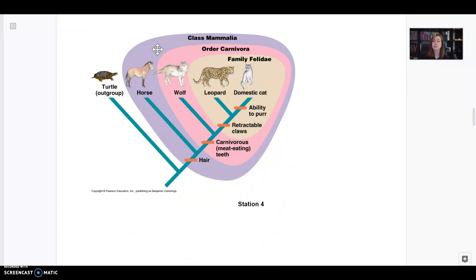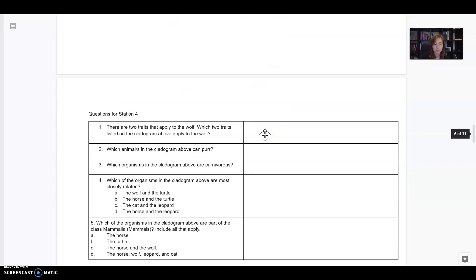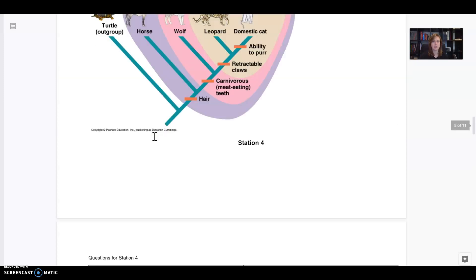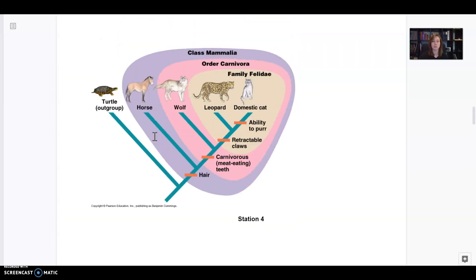Station four is some more practice with cladograms. Let's do just like one or two of the questions together. Question one says there are two traits that apply to the wolf. Which two traits listed on the cladogram above apply to the wolf?